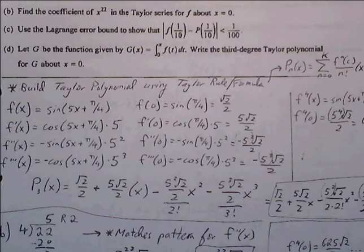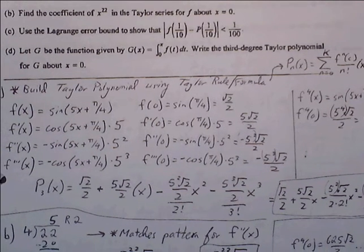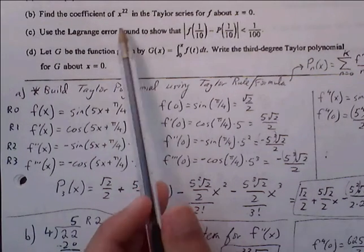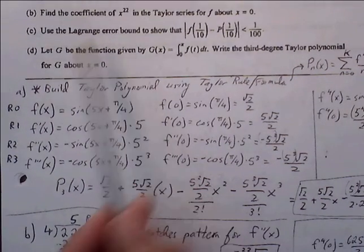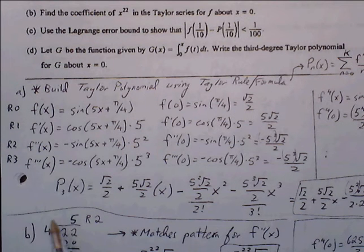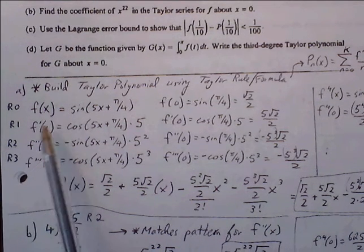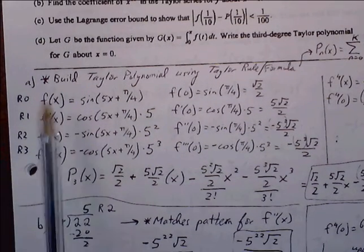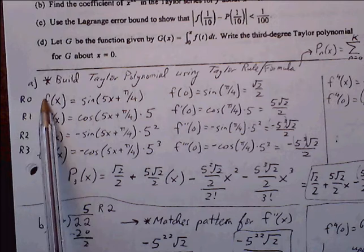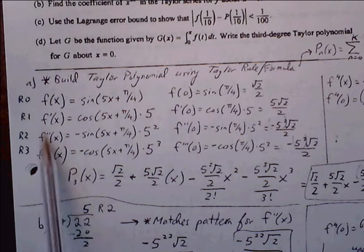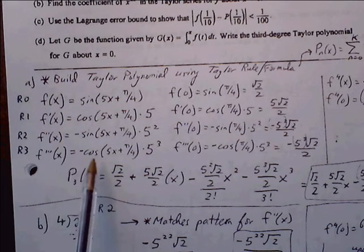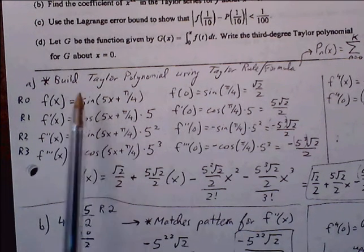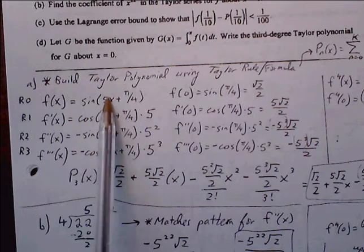Part B: find the coefficient of x to the 22nd in the Taylor series of f about x equals 0. We could keep taking derivatives down to the 22nd, but a more efficient way is to notice that each derivative cycles through 4 patterns. We just need to determine which pattern the 22nd derivative lands on.